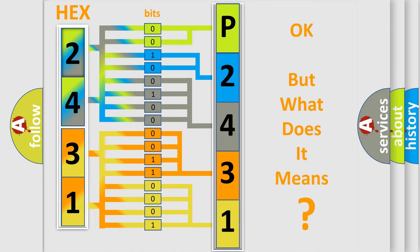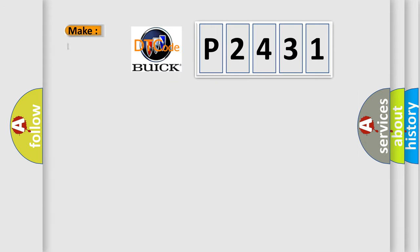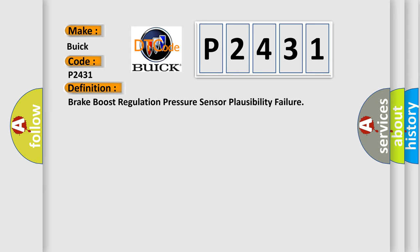The number itself does not make sense to us if we cannot assign information about what it actually expresses. So, what does the diagnostic trouble code P2431 interpret specifically for Buick car manufacturers? The basic definition is: Brake boost regulation pressure sensor plausibility failure.